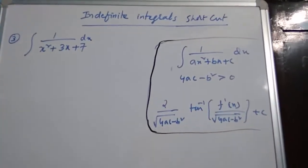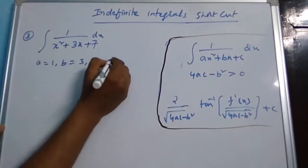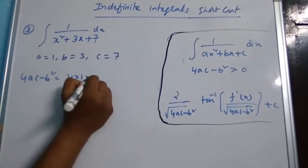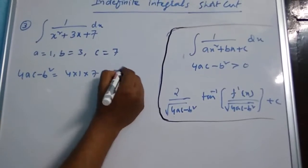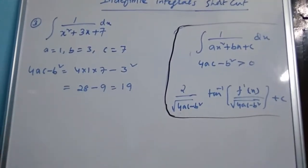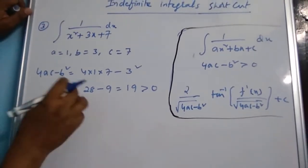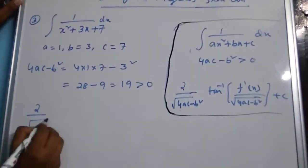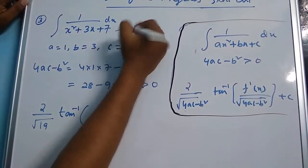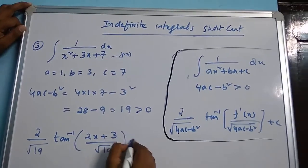Next, the integral of 1 by x squared plus 3x plus 7 dx. Here a equals 1, b equals 3, c equals 7. So 4ac minus b squared equals 4 into 1 into 7 minus 3 squared, which is 28 minus 9, equals 19. Since 19 is positive, we substitute into the formula: 2 over root 19 times tan inverse of f dash of x. Suppose the denominator is f(x); its derivative is 2x plus 3. So the answer is (2 over root 19) tan inverse of (2x plus 3) over root 19, plus c.